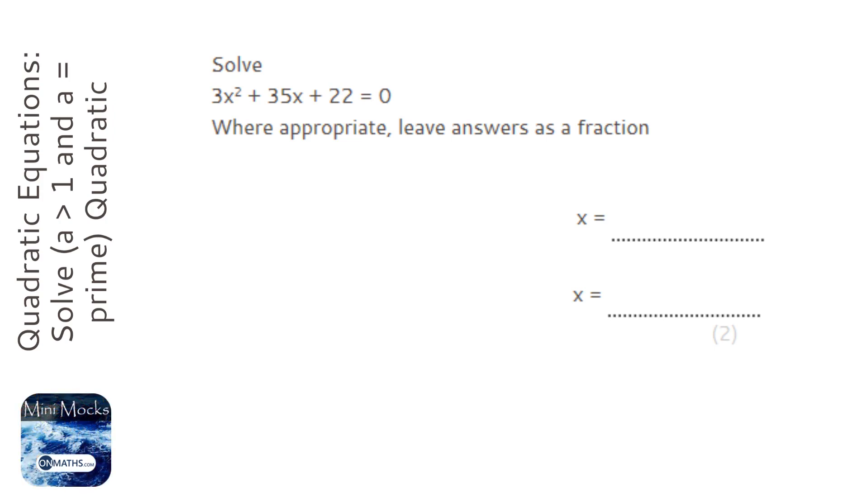So to factorise, all we need to do is multiply the number before the x squared by the number at the end. That will give us 66, and then we've got to find a factor pair of 66 that adds together to make 35.